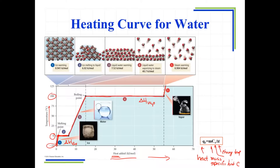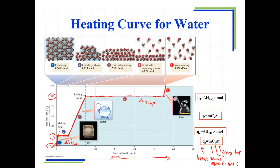At circle number one, we can figure out Q using the Q = mcΔT equation. Then at number two — a phase change — we're not changing temperature, so we cannot use that equation. Instead, we take the heat of fusion, which is the amount of heat to convert a mole of solid to a mole of liquid, and multiply by how many moles we have. At number three, another change in temperature, we use the temperature equation again. For the transition at number four, we use the heat of vaporization — the energy to convert one mole of liquid to one mole of gas — multiplied by moles. At number five, we're heating the gas and can calculate that heat change.